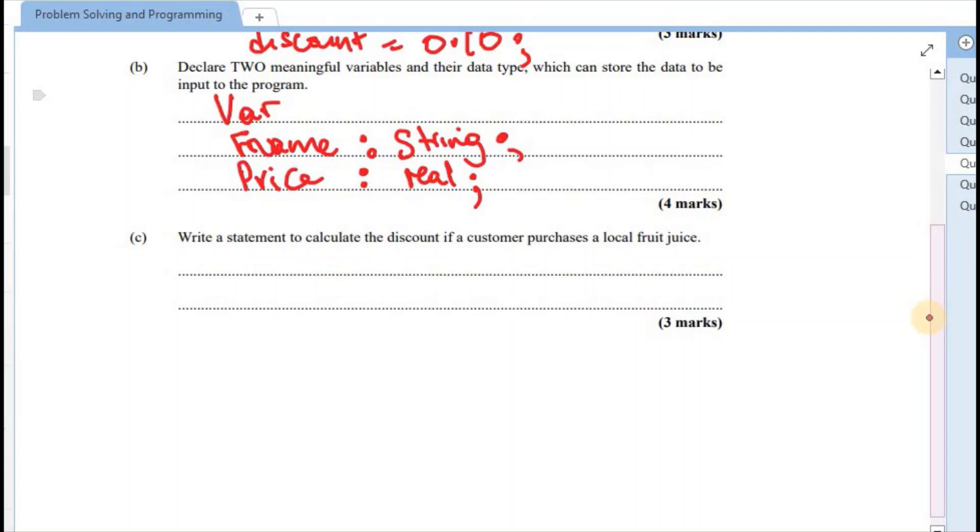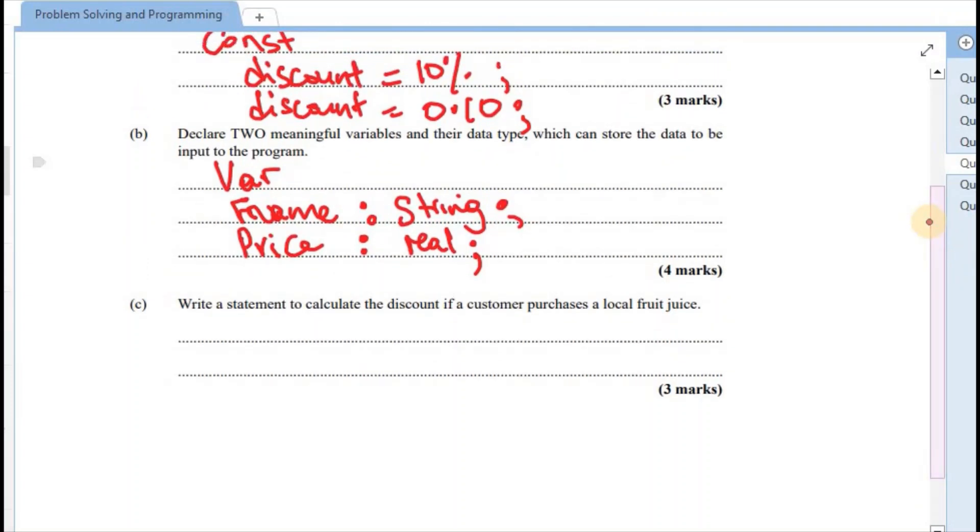Third one, it says to write a statement to calculate the discount if a person purchases the local juice. So what is it that they want to find? They want to find the discount. All right. So that's discount and calculation, meaning that we have a colon along with our equal sign. And then we want to find the discount for the local juice. So we're using price multiplied by the discount amount, which was 0.10. And we end the line with a semicolon.